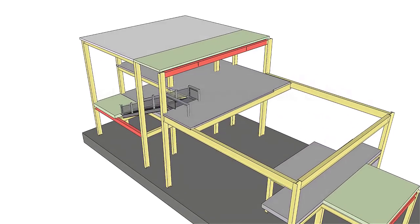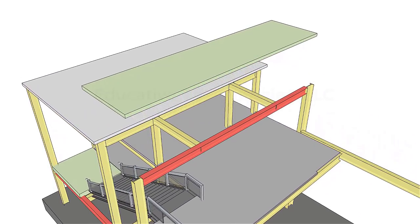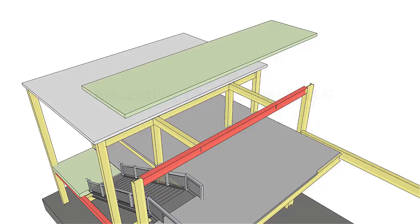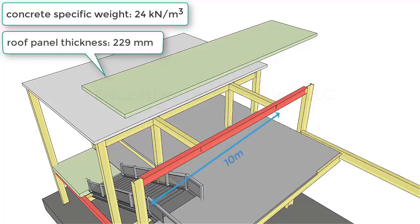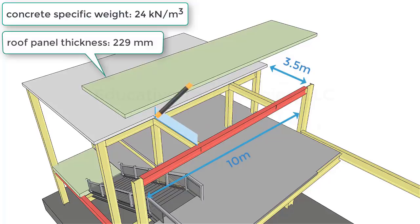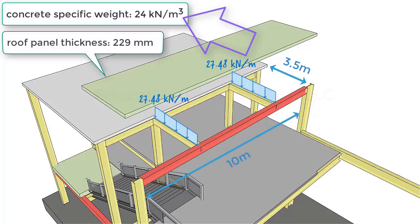Let's start with the long beam on the second floor. Suppose the concrete roof panel, shown in green, is supported by two transversal beams only. The weight of the panel is going to be distributed to the two beams. Assuming the specific weight of concrete is 24 kilonewtons per cubic meter, the roof thickness is 229 millimeters, the length of the red beam is 10 meters, and each transversal beam has a length of 3.5 meters, the uniformly distributed load on each beam will have a magnitude of 27.48 kilonewtons per meter. This magnitude is the product of the specific weight of concrete, the thickness of the roof panel, and half the length of the long beam.